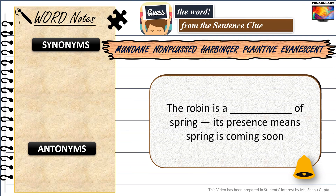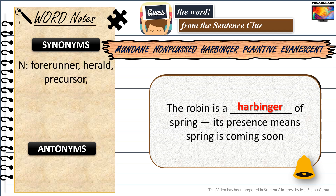Next sentence: the robin is the dash of spring — its presence means spring is coming soon. The word that goes into this blank is harbinger, which means forerunner. Similar words are forerunner, herald, precursor and predecessor. When used as a verb, similar words are announce and foretell.